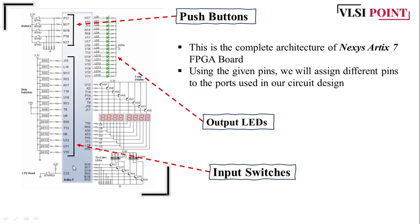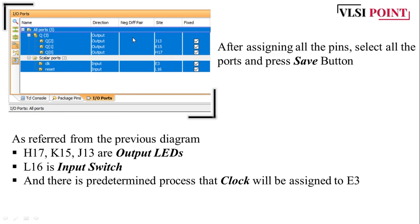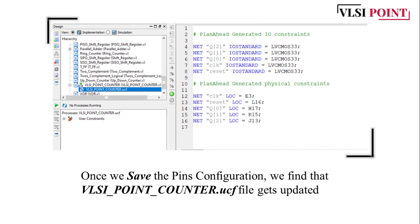This architecture shown is of the Nexus Arctic 7 FPGA board. Here you can see the push button, the output LEDs to check how the design is working, and the input switches. Using the pin assignments, we assign different pins to the ports in our circuit. For output we have J13, K15, H17; for clock we have E3; and for reset we have L16. Select all these and press save — the .UCF file will be updated with the saved pin configuration.